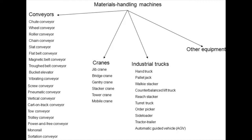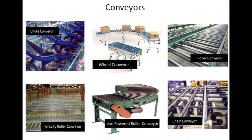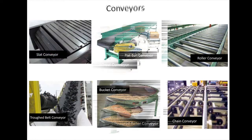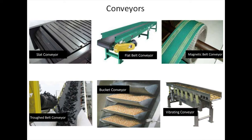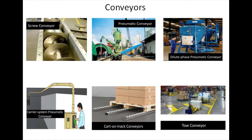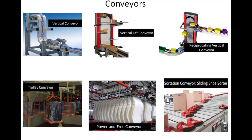Conveyors are very useful for moving materials between two fixed workstations either continuously or intermittently. They are mainly used for continuous or mass production operations where the flow is more or less steady. Conveyors may be of various types with rollers, wheels, or belts, and may be power driven or roll freely. They are usually costly to install and less flexible. Where two or more conveyors converge, it is necessary to coordinate their speeds, which is one of the disadvantages.